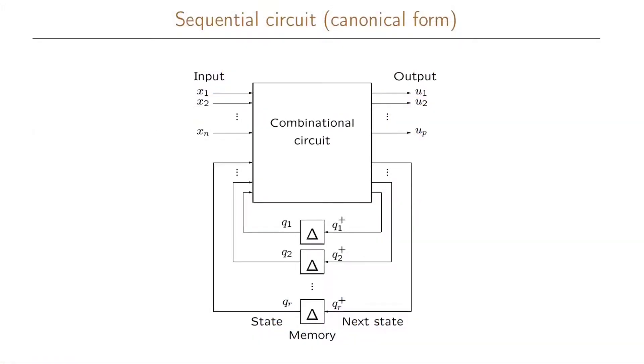Let us now return to our canonical form of our sequential circuit. So what we had here was a set of n inputs, we have p outputs, and we have r different state variables, which means that we can have up to 2 to the r states.